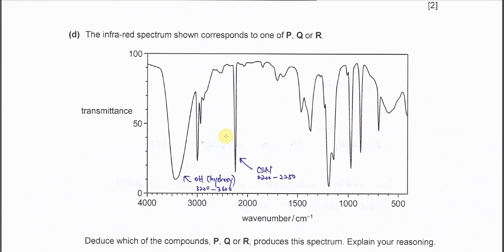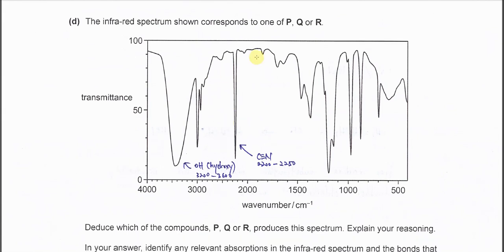For part D. IR spectrum is for either P, Q, or R. From this IR spectrum we can get two absorptions. This broad absorption is for the OH, OH in hydroxide, means alcohol, because it's around 3200. And this another absorption that we can use is this, around 2200. So we know that is nitrile.